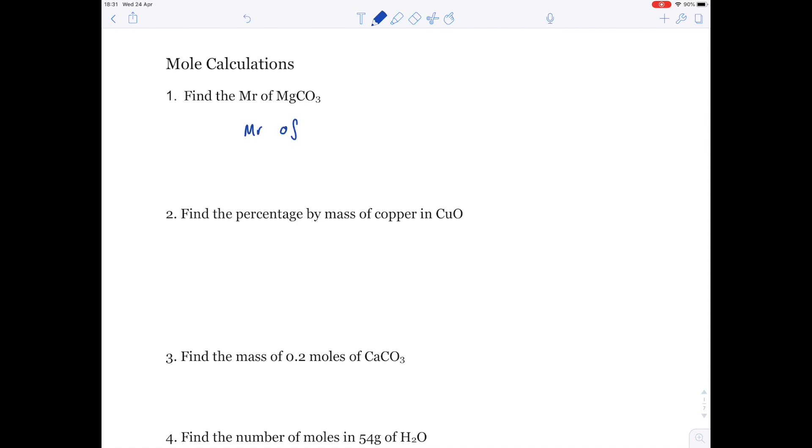The MR of magnesium carbonate is worked out by adding up all the individual atomic masses from the periodic table. So, magnesium is 24, carbon is 12, oxygen is 16, but we need to multiply it by 3 because of this 3 here. Pop the whole lot into your calculator and you get a value which is 84 grams.